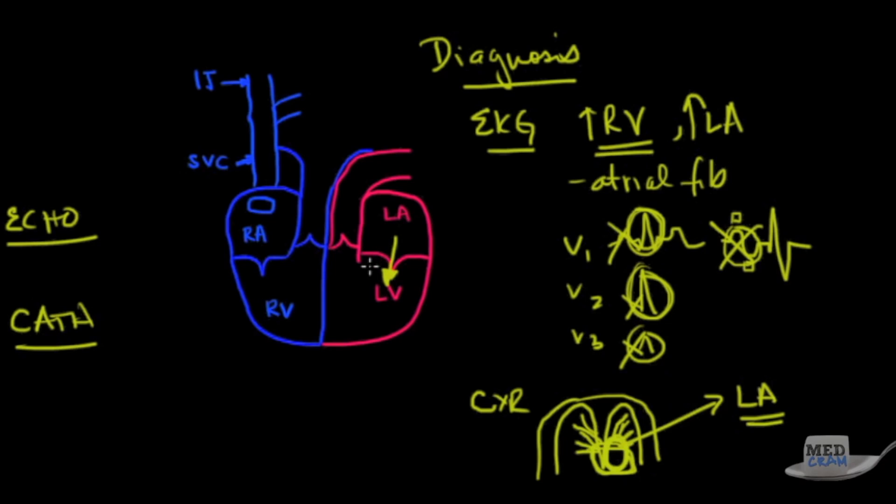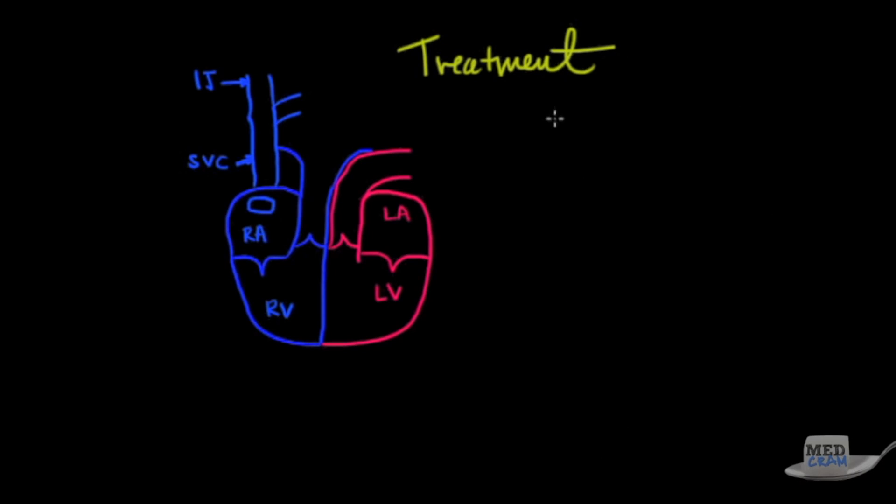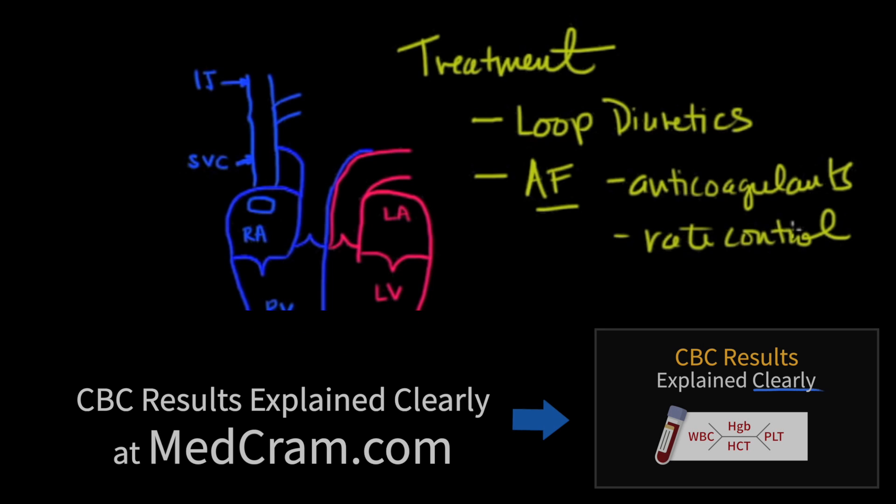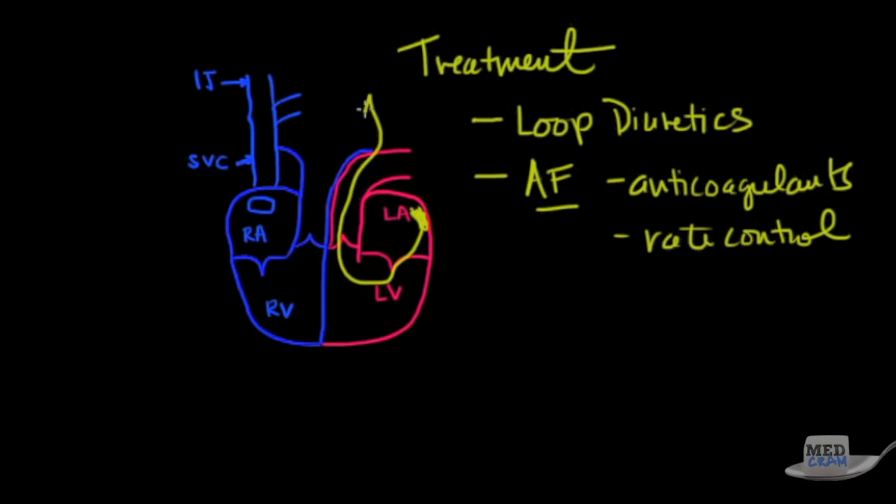For treatment, because the lungs are filling up with fluid and patients are usually dyspneic, we use loop diuretics like Lasix. If you've got atrial fibrillation you need to treat that with anticoagulants like Coumadin and rate control. You want to keep the rate down. If there are clots here you don't want them to embolize up to the brain, so anticoagulation is key.